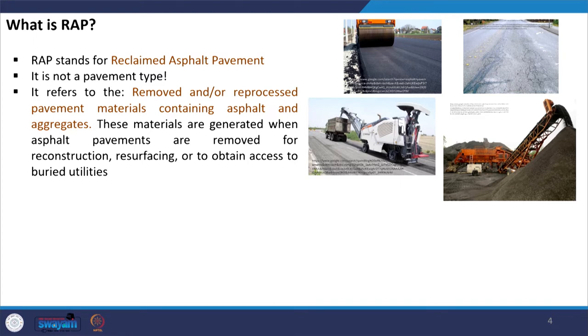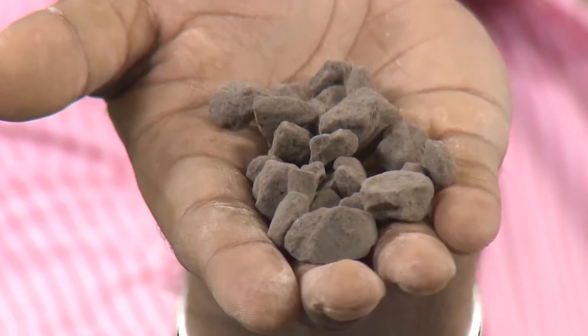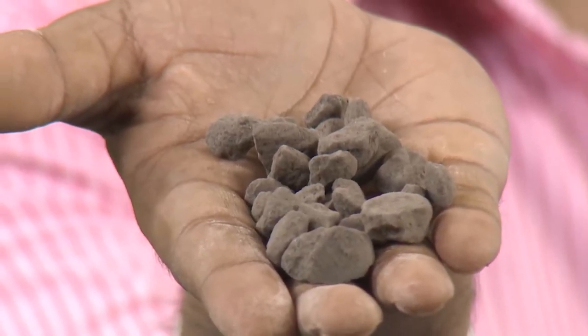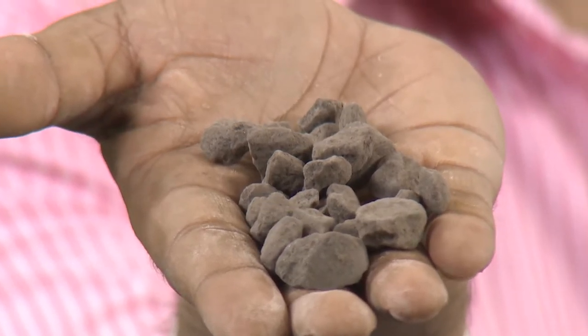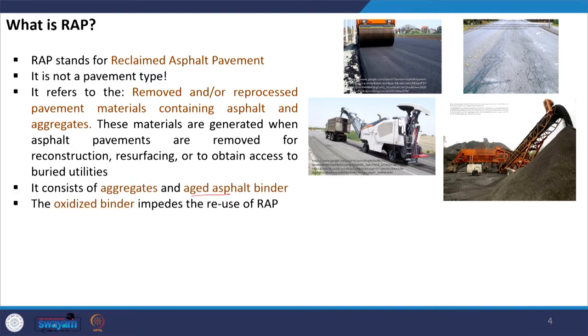RAP materials appear dark brown to blackish in color depending on the age of the pavement and the source of the material. In my hand I have aggregates coated with binder — this binder has aged during service life, so its color has turned from conventional black to a faded dark brown color. The RAP consists of aggregates and aged asphalt binder.